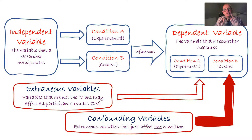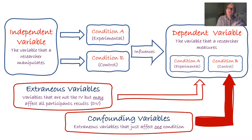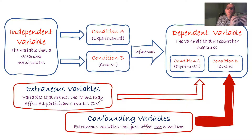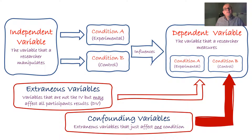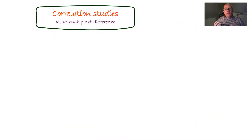If there is an extraneous variable that has an effect on only one of your conditions, we call that a confounding variable. For instance, if my fish eaters did their IQ test in the morning and my non-fish eaters did their test in the afternoon, and the time of day influences IQ test performance, then time of day has had an impact on only one condition - the non-fish eating group. If you have a confounding variable, that is an issue of validity - you are not measuring exactly what you claim to measure.